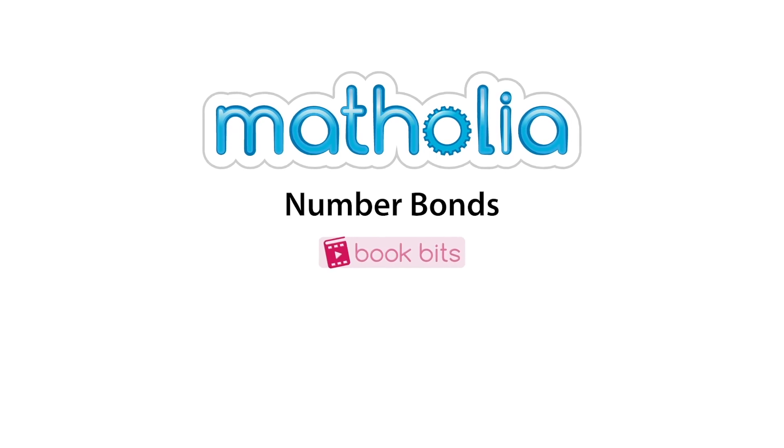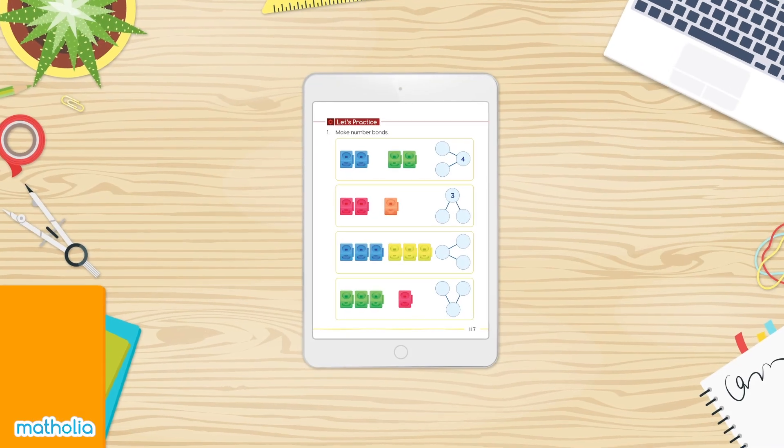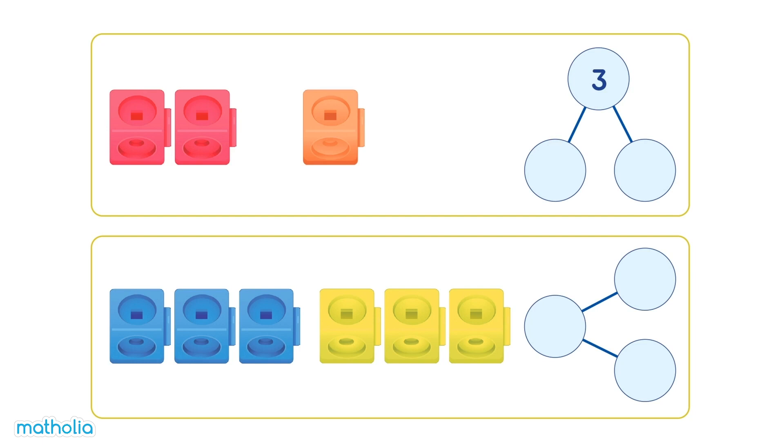Book Bits. Make number bonds. One, two pink cubes and one orange cube. Two and one make three.